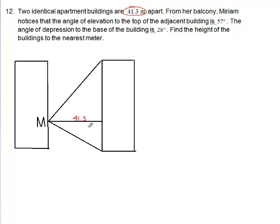From her balcony, Miriam, so I assume the M is Miriam, out on a balcony, her angle of elevation, so Miriam's right here in this building. Her angle of elevation to the top of the adjacent building is 57 degrees. Now angle of elevation for Miriam would be this angle right here. Looking up to the top of the adjacent building right here. So her angle of elevation is 57 degrees.